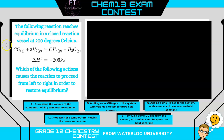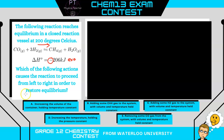In our first question, we have the following reaction that reaches equilibrium in a closed reaction vessel at 200 degrees Celsius. Our enthalpy for the reaction is negative, so we know that this is an exothermic reaction. Which of the following actions causes the reaction to proceed from left to right in order to restore equilibrium?